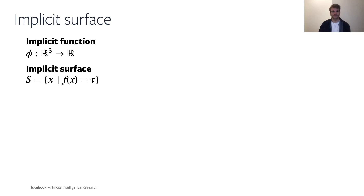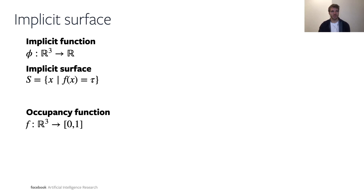There are several types of the implicit function Phi. However, in this tutorial we will mostly focus on the specific type called the occupancy function, which here we denote F. The occupancy function assigns to 3D points values between 0 and 1, such that a value of 0 denotes a point which is completely transparent, and a value of 1 denotes a point which is on an object surface.